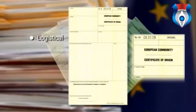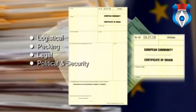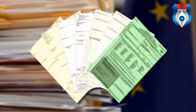European Certificates of Origin are used for several reasons: logistical reasons — actually moving the goods; packing reasons; legal reasons — to meet UK, European Union, and international law requirements; political and security reasons, including anti-terrorism; ecological and health reasons, to prevent the spread of disease and infestation; and financial and payment reasons, perhaps the main reasons for exporting.